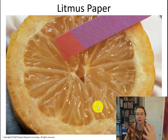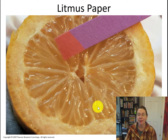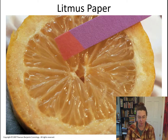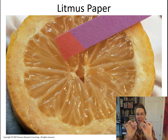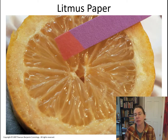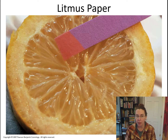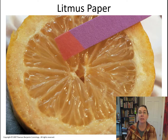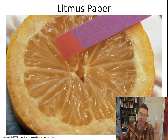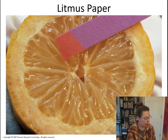An example of an indicator is litmus paper. Litmus paper comes in two forms: red litmus paper and blue litmus paper. Blue litmus paper, if you put it into an acid, will turn red, but if you put it into a base it stays blue. On the other hand, red litmus paper put in an acid stays red, but if you put it in a base it will turn blue.